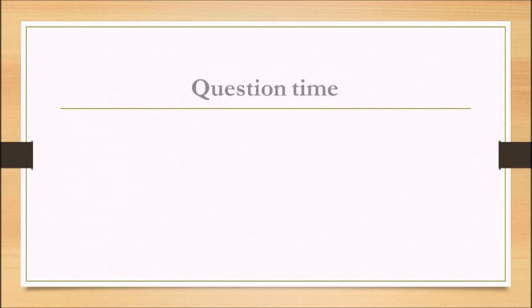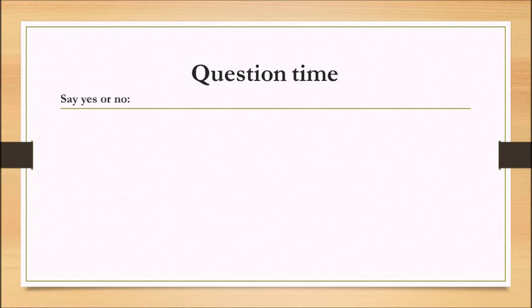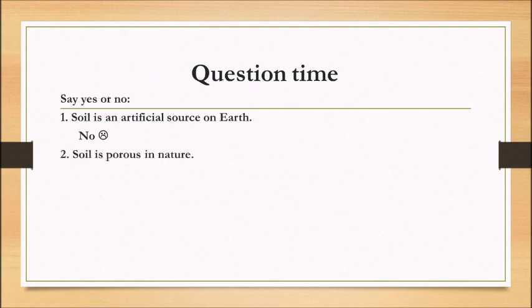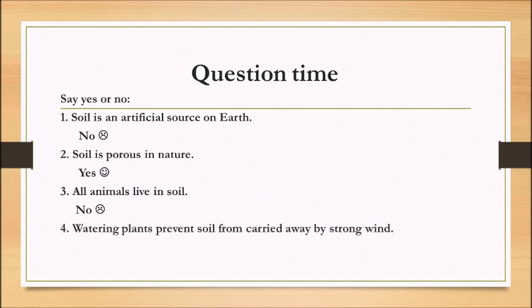It's question time. Say yes or no. Soil is an artificial source on earth. No. Soil is porous in nature. Yes. All animals live in soil. No. Watering plants prevent soil from carried away by strong wind. Yes.